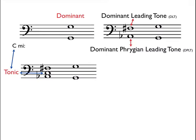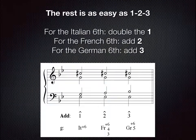Third, add the tonic, which is a major third above the dominant Phrygian leading tone. The rest is as easy as one, two, three. For the Italian six, double the tonic. In this case we're in G minor, so the G is the tonic. For the French six, add the supertonic — the second note of the G minor scale, which is an A. And for the German six, add the third note of the G minor scale, which is B-flat.